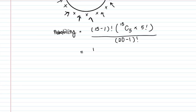The probability works out to 1001/38,760. To reiterate: every time no two people can be sitting next to each other in a circle, use the insertion method. Insert by choosing from the available gaps, permutate those inserted, and permutate the rest already seated using (n-1)! for circular arrangements. For probability, divide by the total number of ways all of them sit in a circle: (20-1)! = 19!.